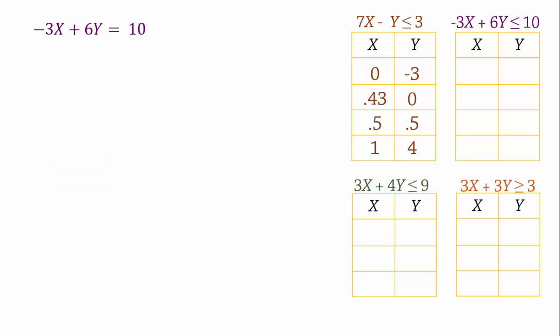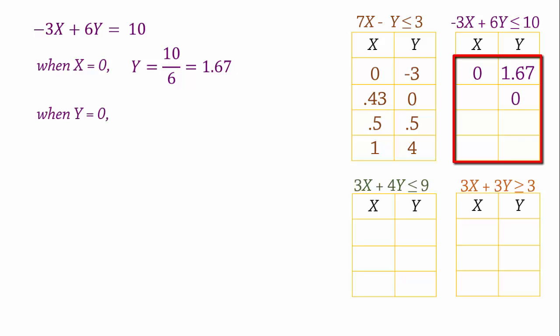For constraint 2, we have the line negative 3x plus 6y equals 10. When x equals 0, y equals 1.67. And when y equals 0, x equals negative 3.33. Again, let's try more points.